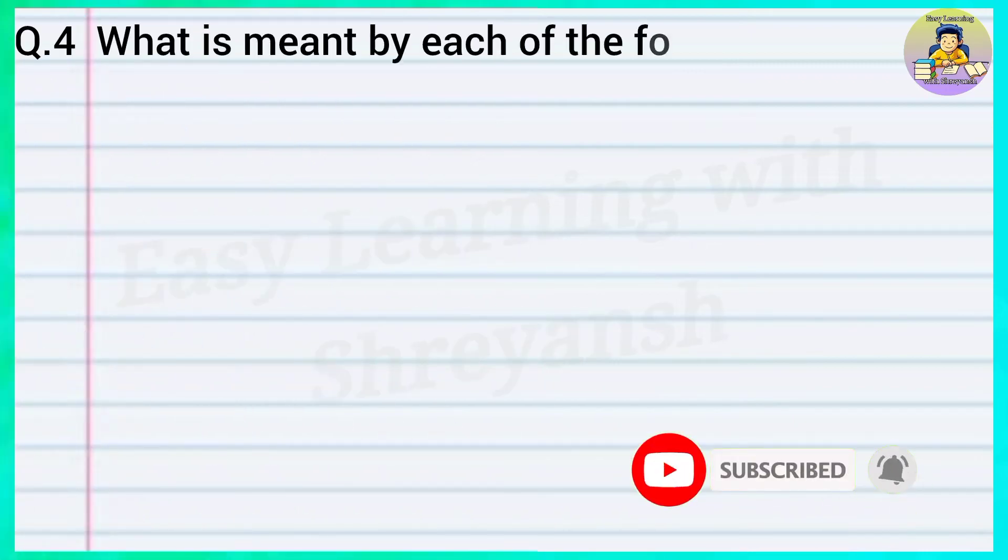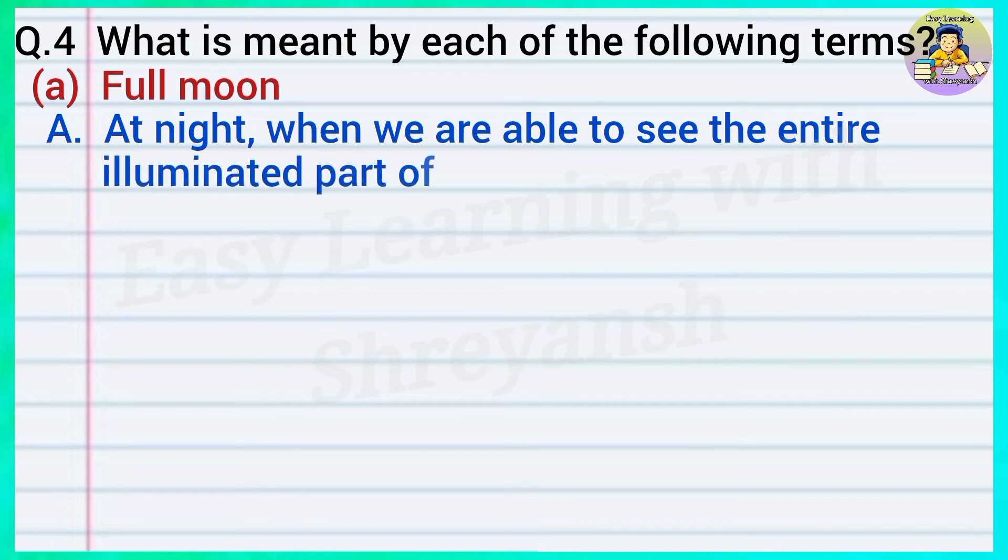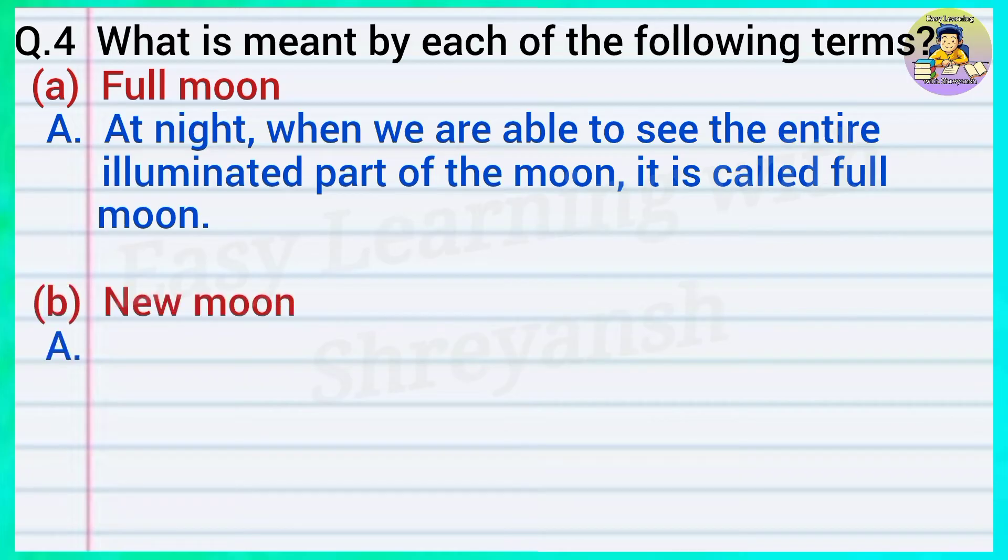Question number 4: What is meant by each of the following terms? A) Full moon. Answer: At night, when we are able to see the entire illuminated part of the moon, it is called full moon. B) New moon.